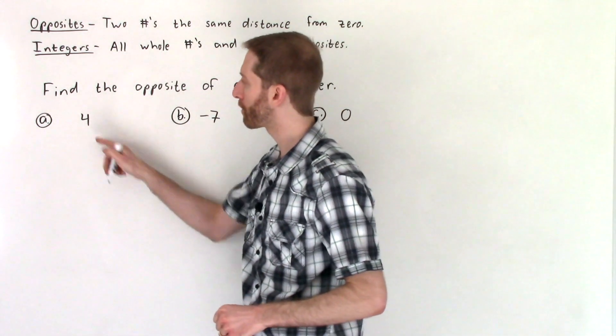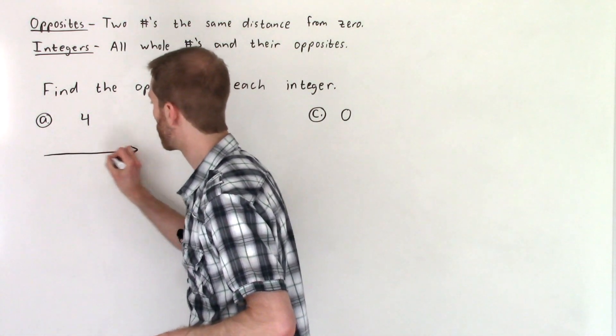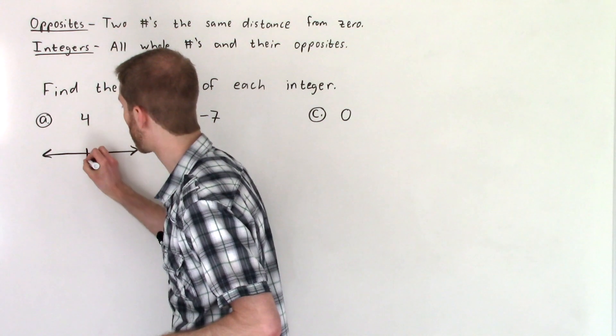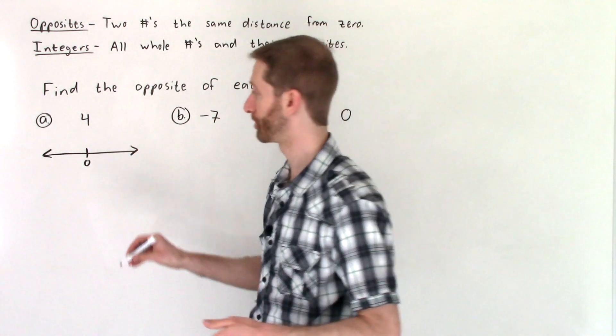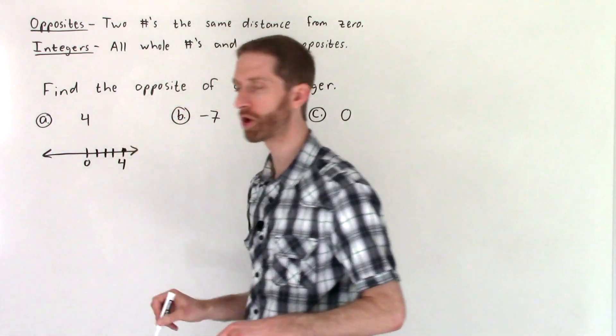So number four, we want the opposite of four. Well, the opposite of four on a number line would be a number that is also four away from zero, but in the other direction. So one, two, three, four, that would be positive four. So that's where we currently are.